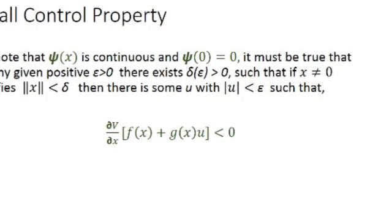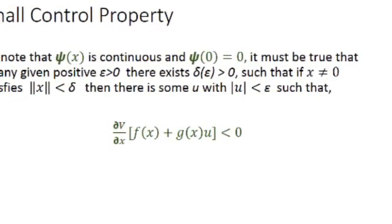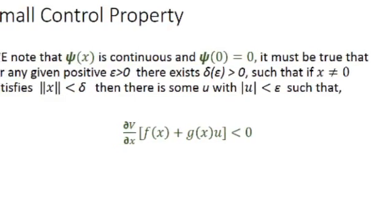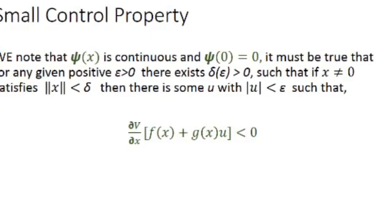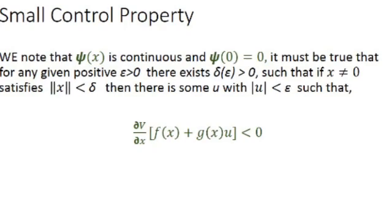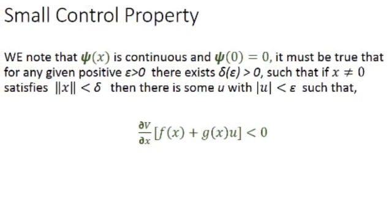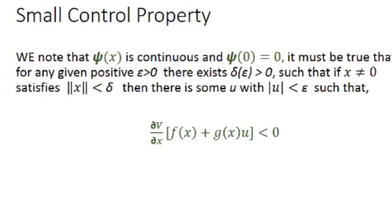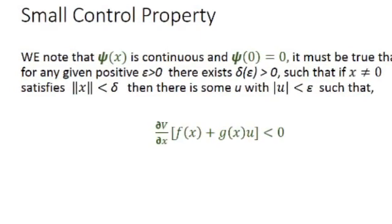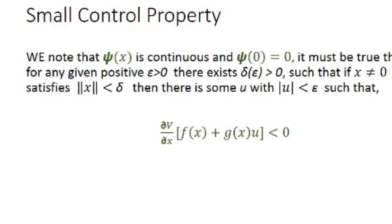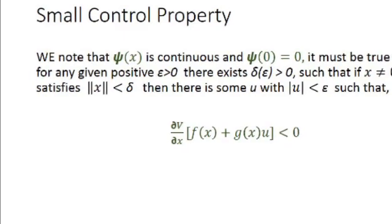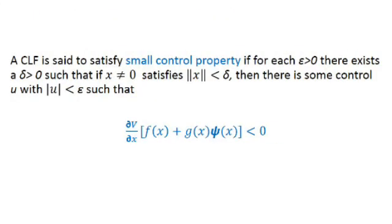Now let us talk about the small control property. We note that psi(x) is continuous and that psi(0) equals zero. Then it must be true that for any given positive number epsilon greater than zero, there exists a delta (which is also positive) such that if x is not equal to zero and x is within the region bounded by delta, then there exists a control u bounded by epsilon such that the derivative of the Lyapunov function is negative definite.